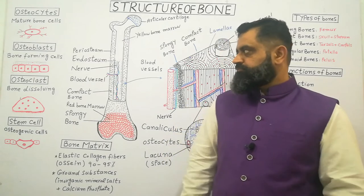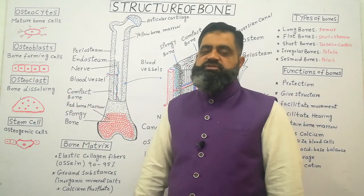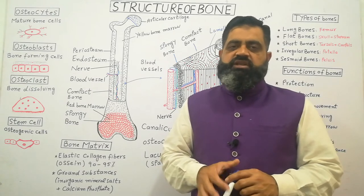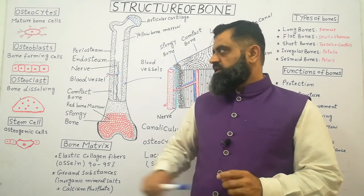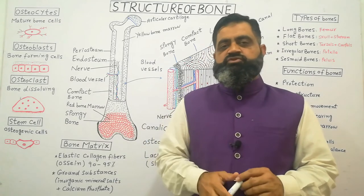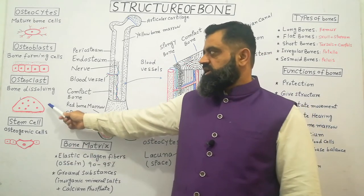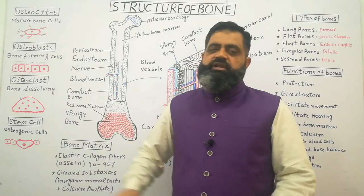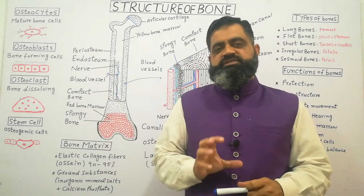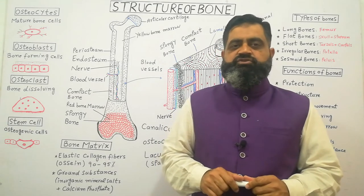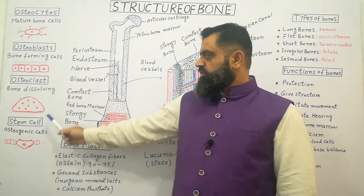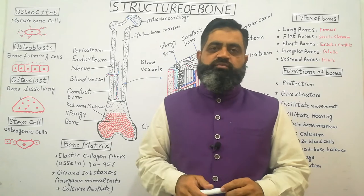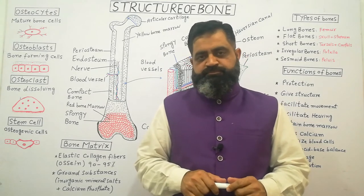The third type of bone cells are osteoclasts, which are bone-dissolving cells. They resorb bone, clean up debris after fractures, and dissolve cartilage or connective tissue as needed. Osteoclasts are multi-nucleate and contain macrophages and white blood cells that dissolve material through phagocytic activity. The fourth type are stem cells, also known as osteogenic cells, which give rise to all other types of bone cells.